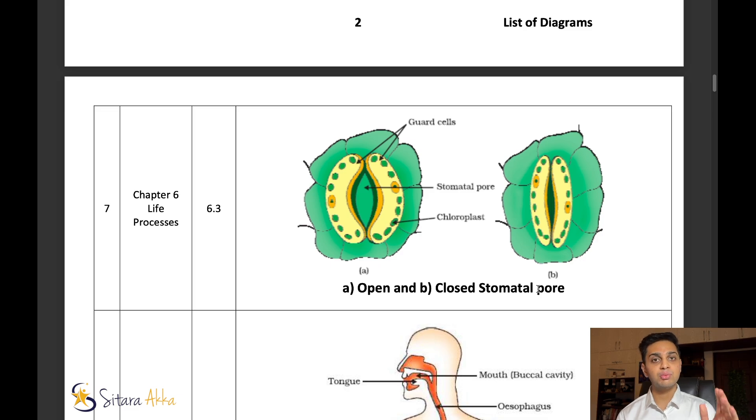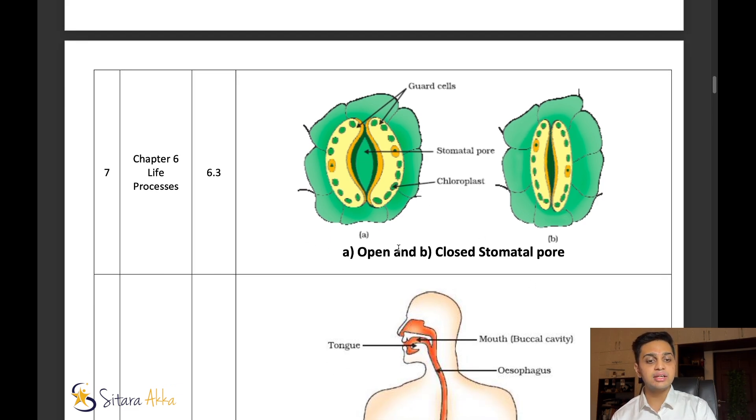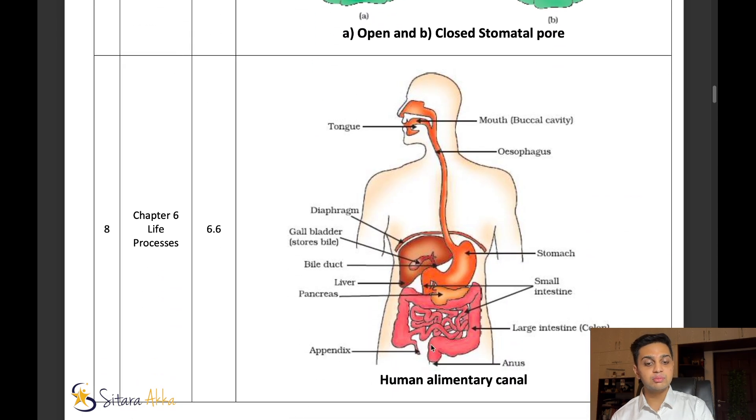Because in this chapter itself, most of the marks are going to be from diagrams. The first one is the opening and closing of the stomatal pore. Next, the most important diagram is human alimentary canal, or our digestive system. In this whole process, you also have to do the labeling carefully. You have to fill in the blanks for the diagram and label these organs: liver, stomach, small intestine, large intestine.